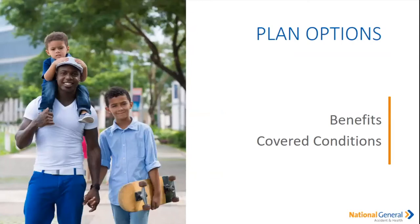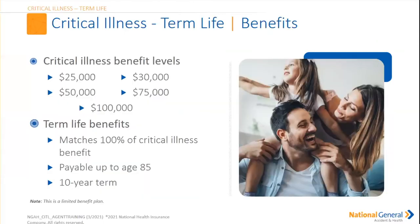We're going to go over the benefits and the covered conditions. On the critical illness benefit levels, we offer $25,000, $30,000, $50,000, $75,000, and $100,000. The term life benefit is going to match 100% of that critical illness benefit, payable up to age 85 on that term life. Please note it is a 10-year term.